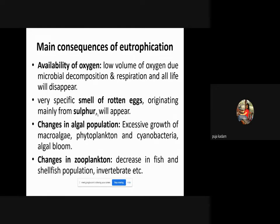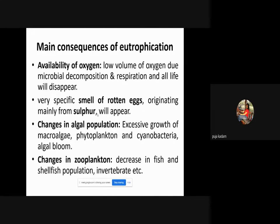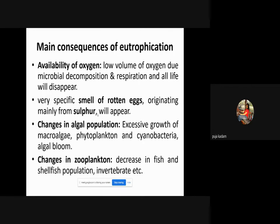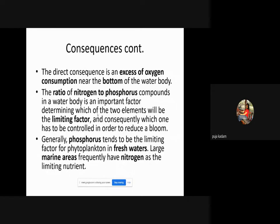The original aquatic plants that should be in a water source disappear as excessive algae and phytoplankton grow. Changes in zooplankton include a decrease in the diversity and quality of aquatic animals, with decreasing fish and shellfish populations, invertebrates, and others. Some very small organisms that can survive with less oxygen may still be seen in polluted water. A direct consequence is excess oxygen consumption near the bottom of the water body.